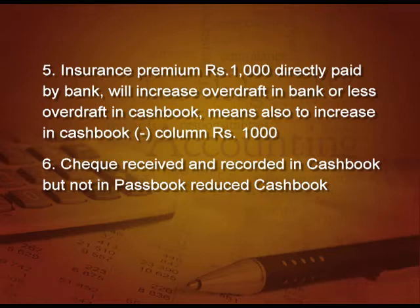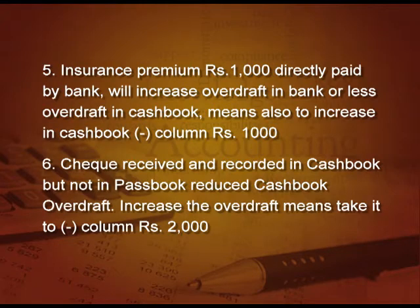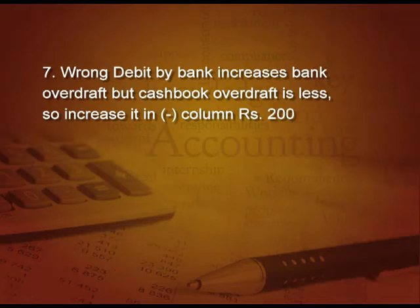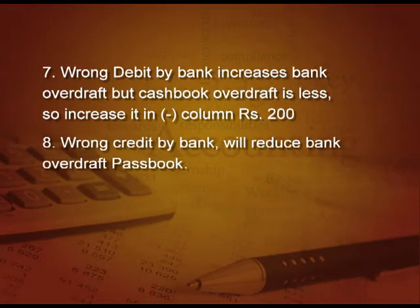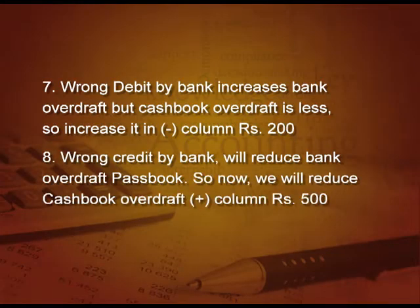Point number 6: check received and recorded in cash book only, but not in pass book has reduced the cash book overdraft, so now increase the overdraft — take it to the minus column again. Point number 7: wrong debit by bank will increase the bank overdraft in pass book, but cash book overdraft is less, so increase again — go to the minus column 200. Point number 8: wrong credit by bank will reduce bank overdraft in pass book, but we started with cash book so overdraft is more — reduce cash book overdraft and go to the positive column, writing 500.